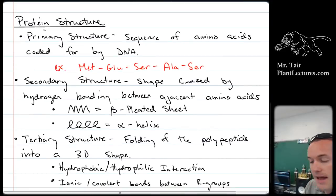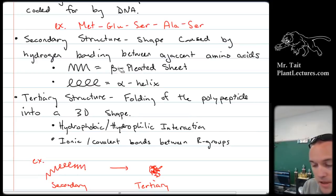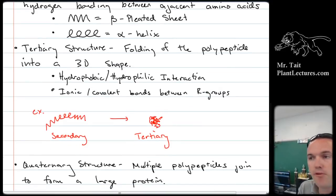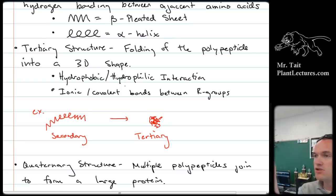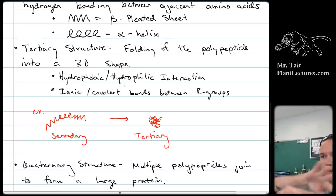When a protein gets made, it has a primary structure that is the sequence of amino acids. It has a secondary structure caused by hydrogen bonding between adjacent amino acids, resulting in either a beta-pleated sheet or an alpha helix. It has a tertiary structure that's the actual folding of the protein. The folding of the protein is caused by hydrophobic-hydrophilic interactions — hydrophobic amino acids group towards the center of the protein, and then the hydrophilic ones wrap around it, giving it its final shape.